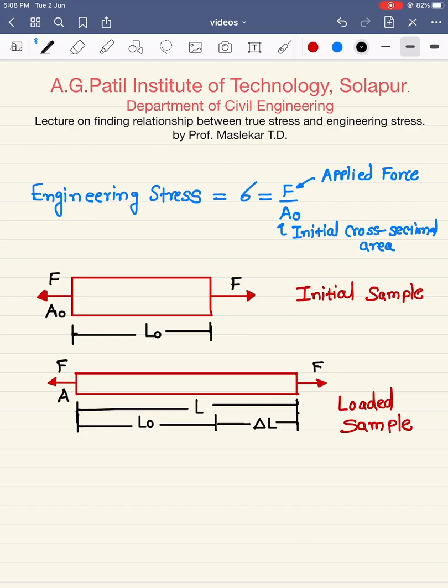Engineering stress is denoted by the symbol sigma, which is calculated using the formula F upon A0, where F is the applied force and A0 is the initial cross-sectional area.